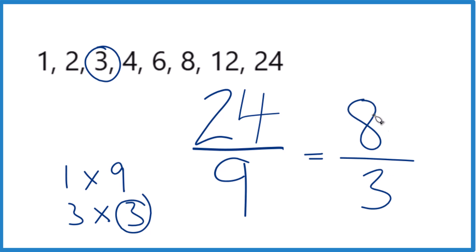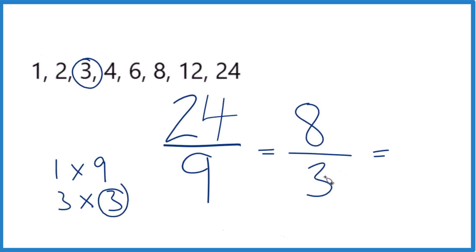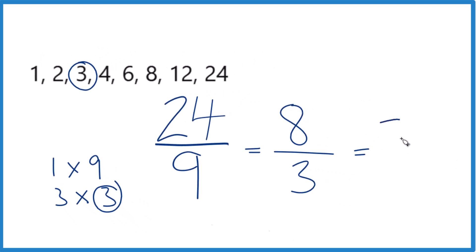This is an improper fraction, though, because the numerator is larger than the denominator. So let's change it to a mixed number. 3 goes into 8, 2 times 3 would be 6 with 2 left over, and then we just keep the 3 across.